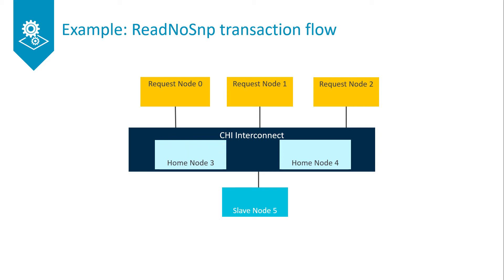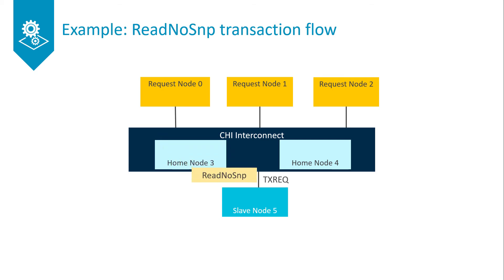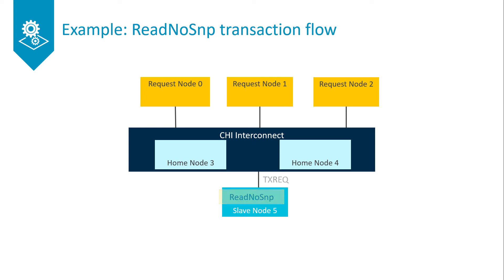Home node 3 then issues a read no snoop to slave node 5 on its TX-REQ channel to retrieve the data.